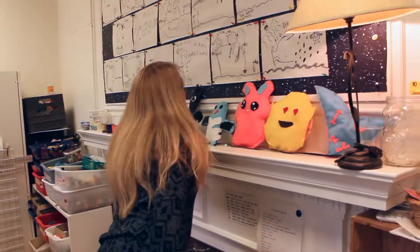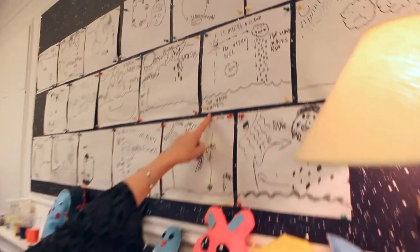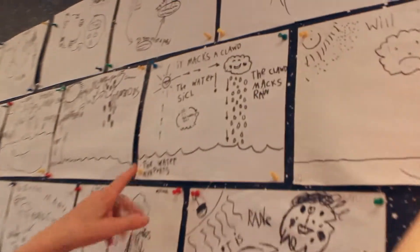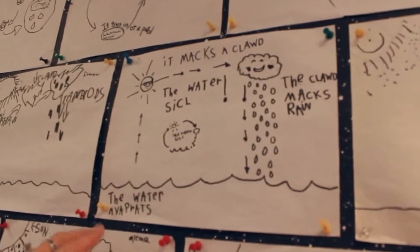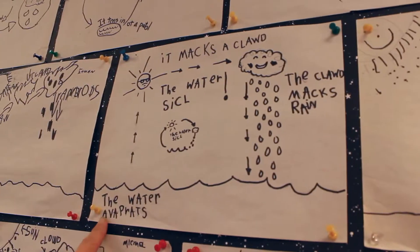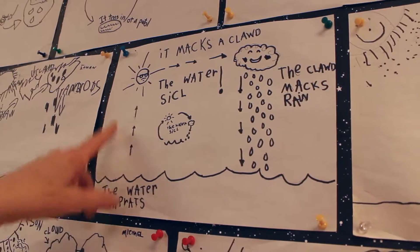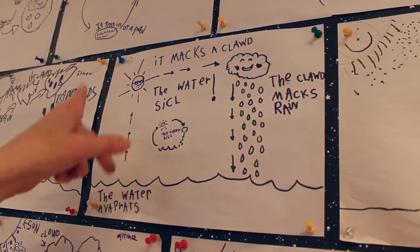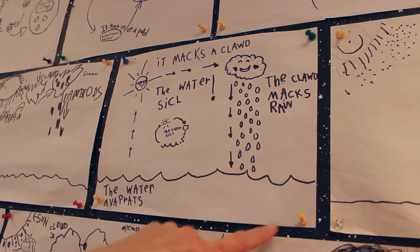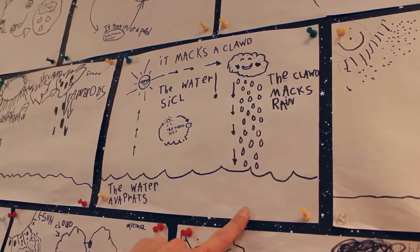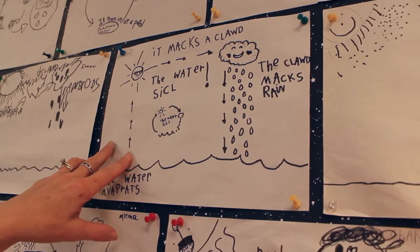With grade one, I find drawing is a great way for them to show their understanding because a lot of them their writing's not so strong. So this one's a nice example because the child has drawn and then I would encourage them to add labels and things to their drawing — some words and some arrows to show the water evaporating, making a cloud, the cloud makes rain, and showing the sun.